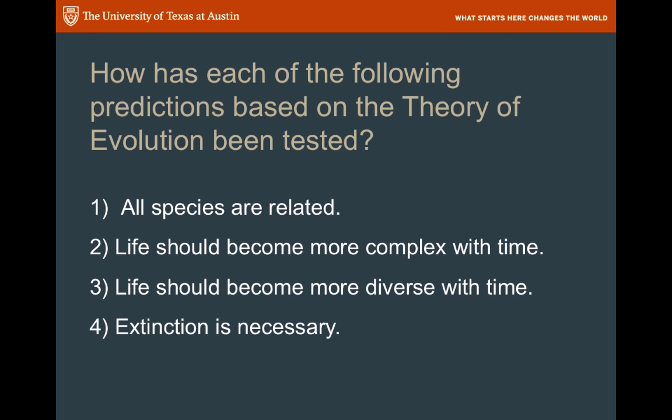Another thing that derives from the theory of evolution is that some species are going to go extinct because they won't adapt properly. In fact, the vast majority of all species that ever existed are extinct today. The theory predicts that better adaptive species will replace less adaptive species, and we should have more extinction than survival — and in fact we do.